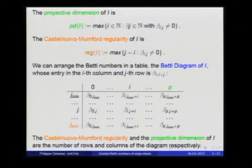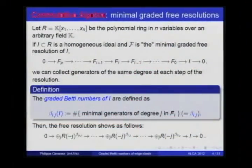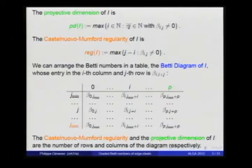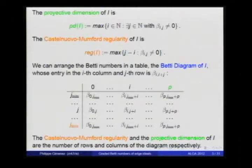The Betti numbers are important invariants. In the resolution, we have the projective dimension, which is the size of the resolution — the last step, how far we go. We know that this stops by Hilbert's syzygy theorem. The Castelnuovo-Mumford regularity, which appeared in Israel's talk this morning, is the maximum of all the degrees minus the step where they appear in the resolution. Usually this numerical information is stored in a box called the Betti diagram of I.